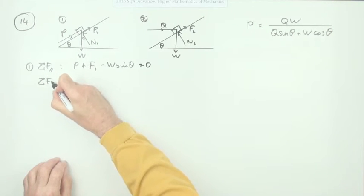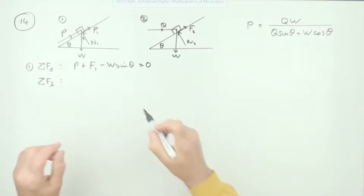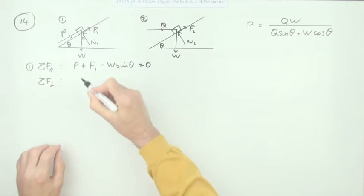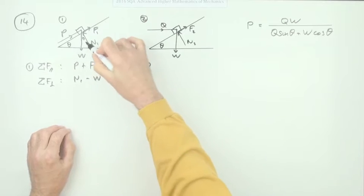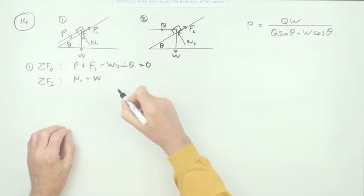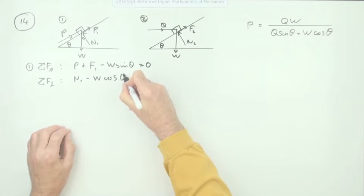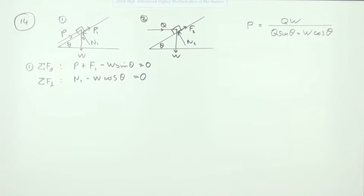Sum of the forces perpendicular to the plane, there's only the two of them. There's just N, if I take it upwards you've got N1, and of course W is acting against that minus W, and the portion acting down is adjacent to the angle so that'll be cos θ equals zero.